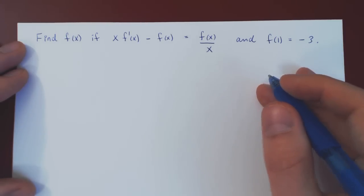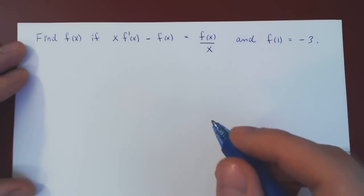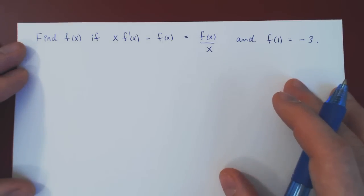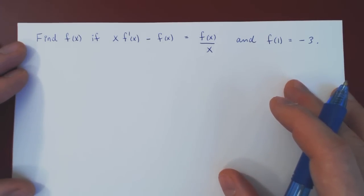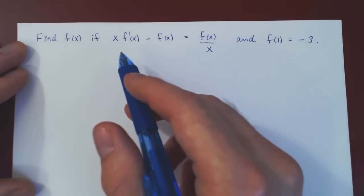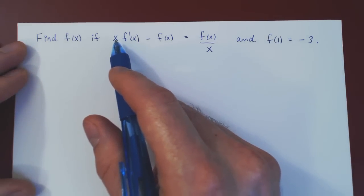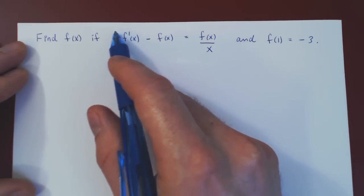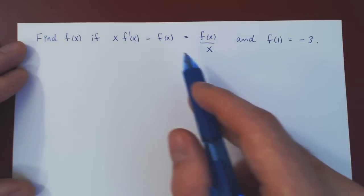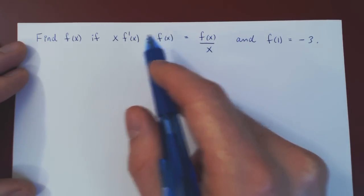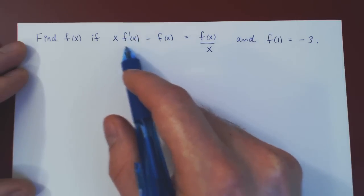In this video, we will consider our first example of what's known as a separable differential equation. A differential equation is an equation involving three things: the independent variable, the actual function, and its derivatives.